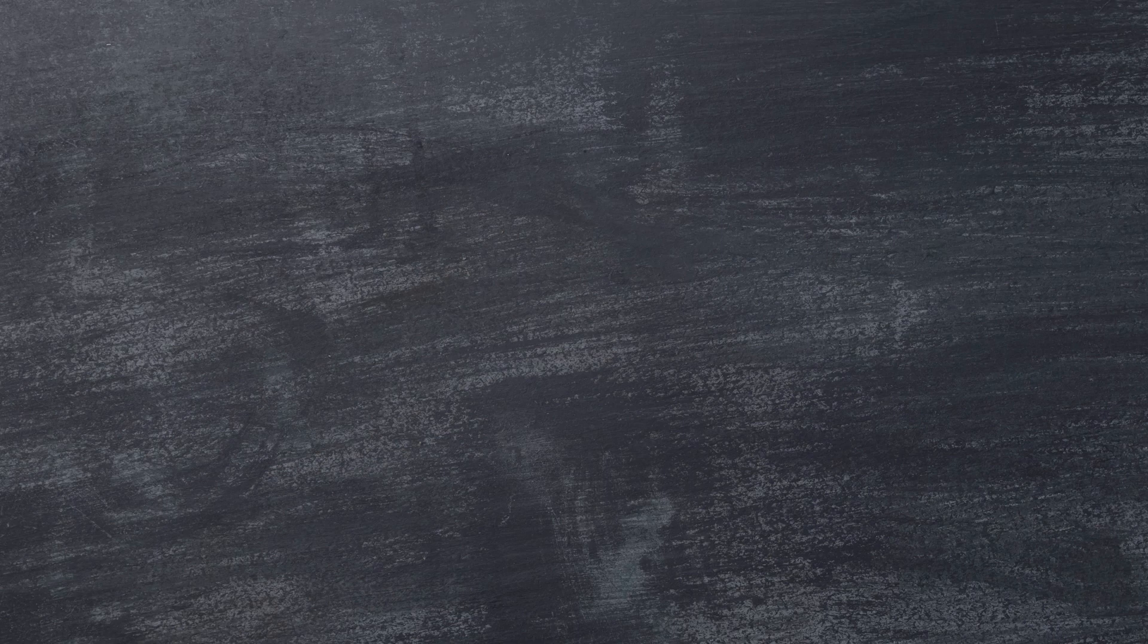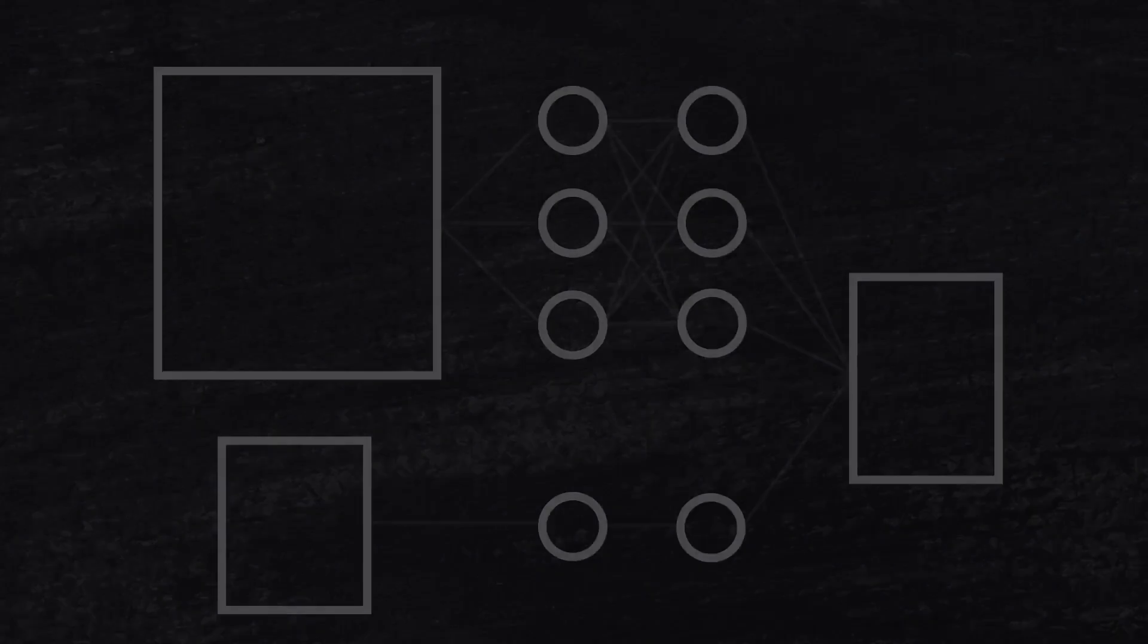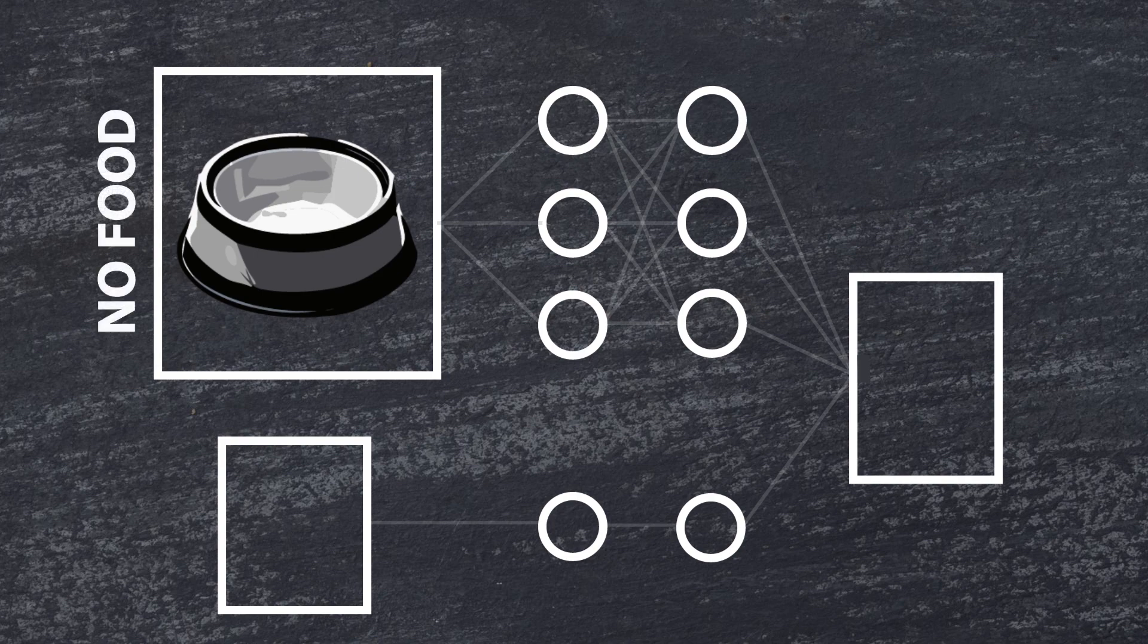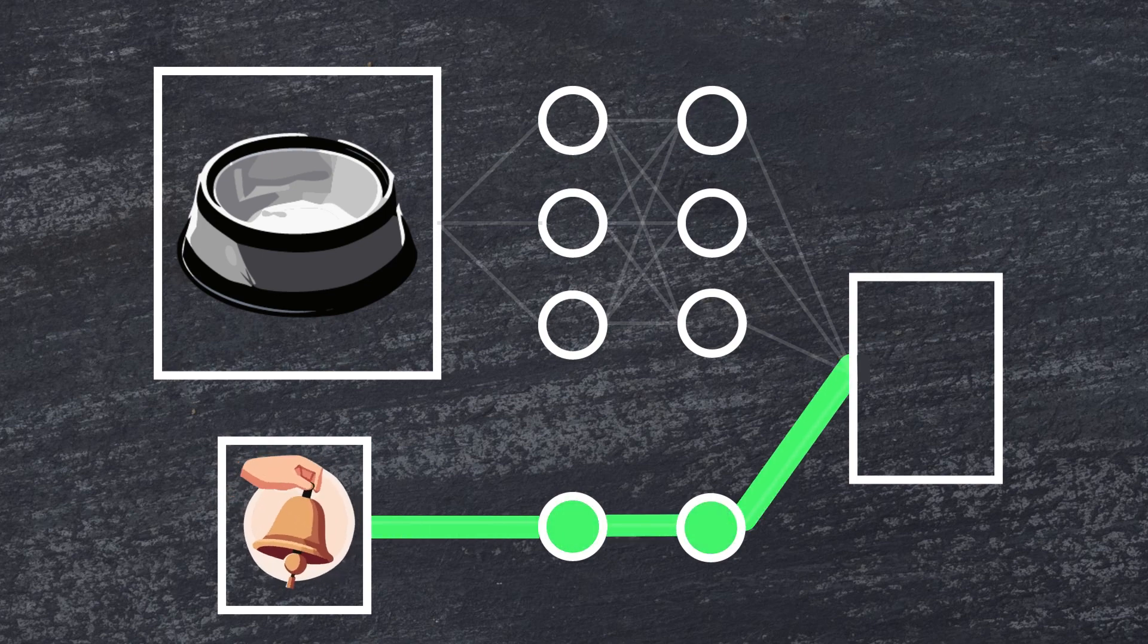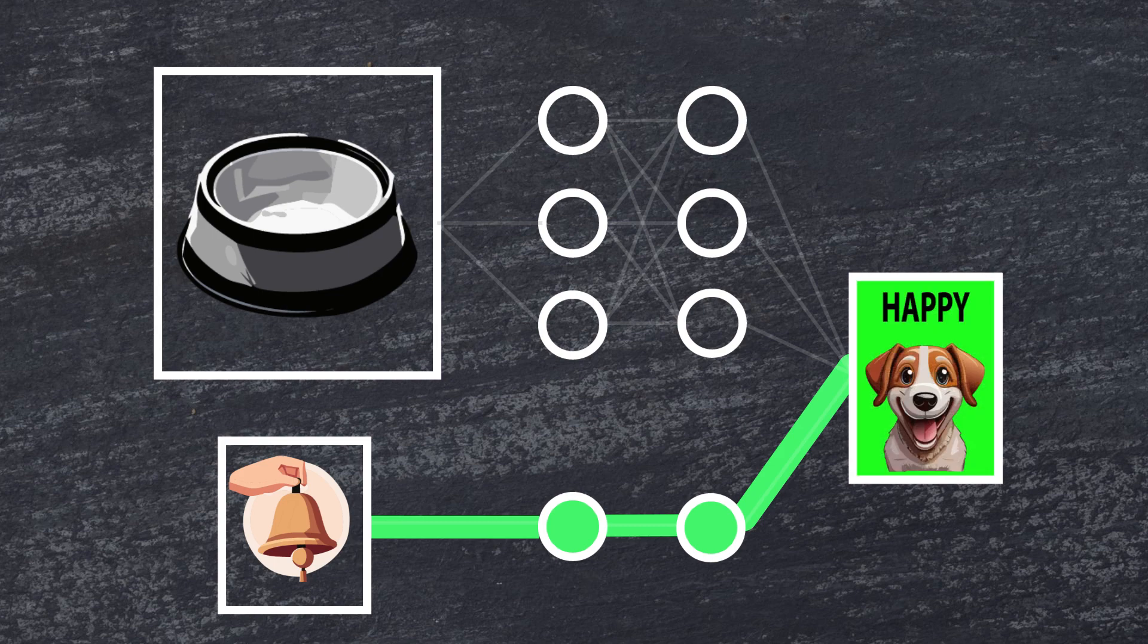And then came the discovery. Pavlov didn't give food, but he did ring the bell. And the dog salivated. The dog became happy. Food was no longer needed. The bell alone made the dog happy. And all thanks to this shortcut, the bypass, the decoy neural link, the brain was hacked.